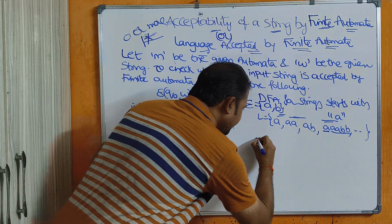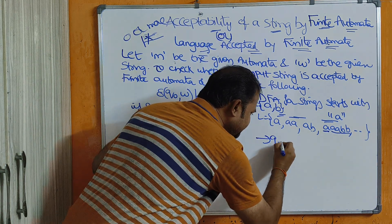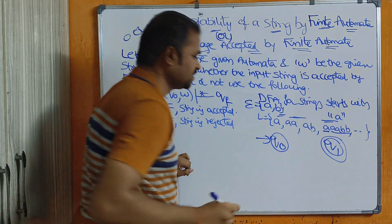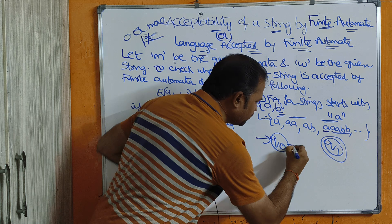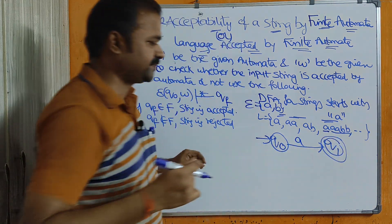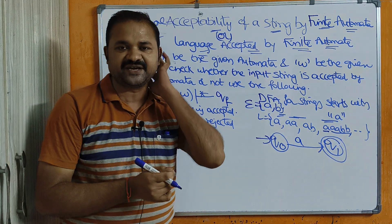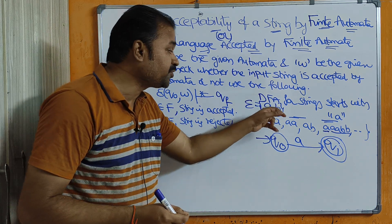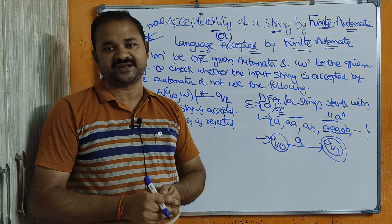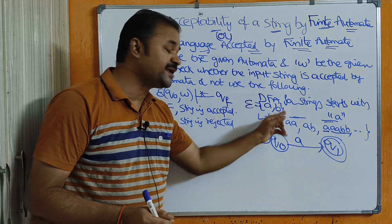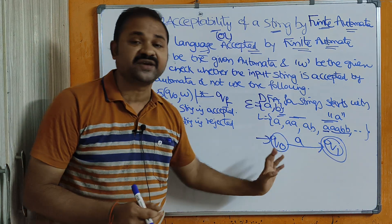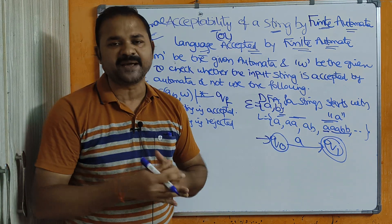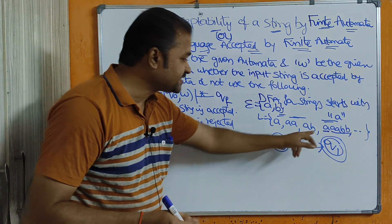The first state is q-naught, the initial state, and the next state is q1, the final state. If we apply 'a' on q-naught, we go to q1. However, in a DFA we must apply all alphabet symbols on each and every state, so we must also define what happens when 'b' is applied on q-naught.